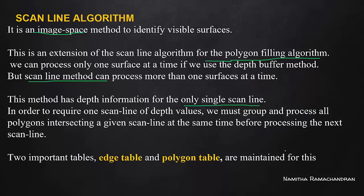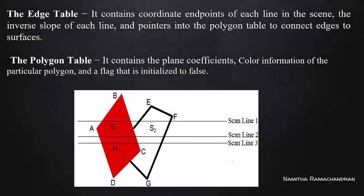We have to load the intensity values. In order to require only one scanline of depth values, we must group and process all the polygons intersecting a given scanline at the same time before processing the next scanline. We have to do a scanline for polygon filling.